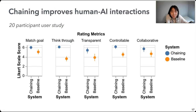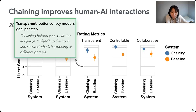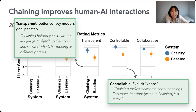Through a user study comparing chaining to the standard baseline without chaining, we see our users really like interacting with large language models through chaining. In particular, they find chaining makes their interaction more transparent, because after task decomposition they are more aware of what the model can do. They also feel that interacting with and changing the output of each step helps them steer the system toward their final goal. One participant phrased it nicely: 'Chaining makes it easier to fine-tune things. Too much freedom without chaining.'